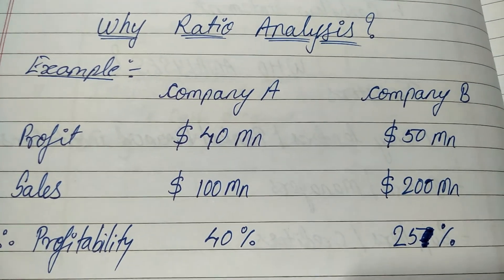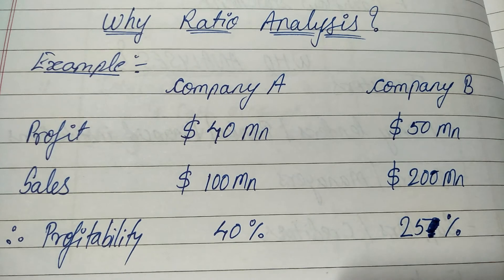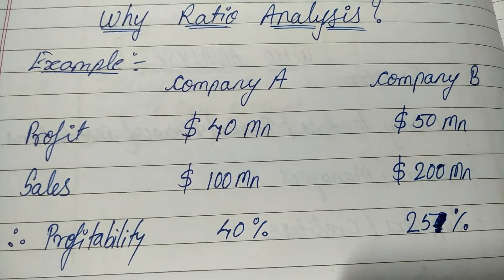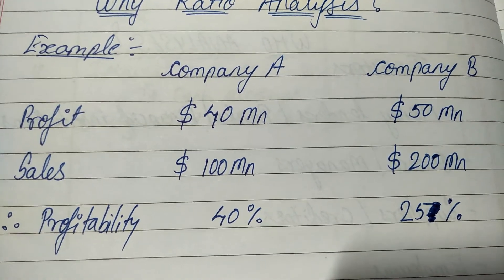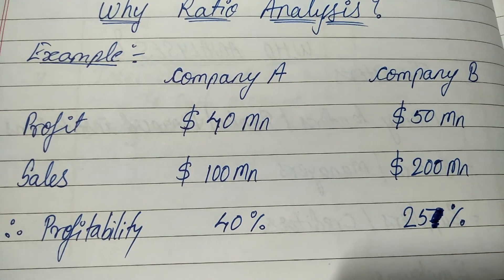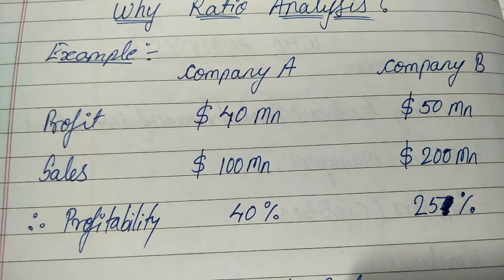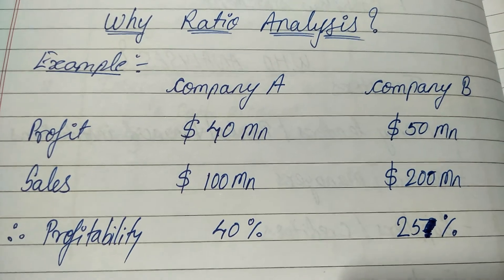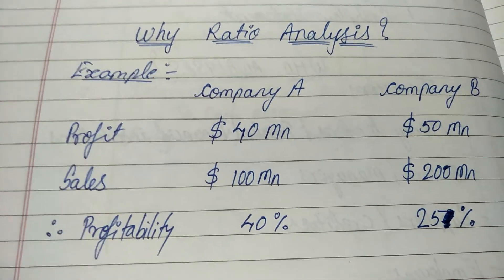When you compare the ratio figures for both companies, we understand that the profitability of Company A is quite better than that of Company B. Looking at only profit figures would have told you Company A is not so good and Company B is better, but when you compare it with sales, the profitability of Company A is 40% whereas that of Company B is only 25%. This is the basic importance of ratios — ratio analysis is always preferred over absolute figures.